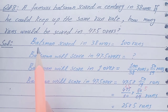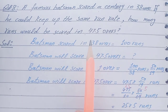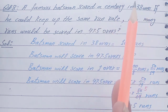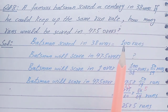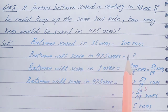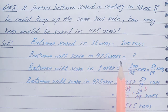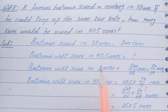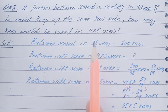Solution: it is given that the batsman scored 100 runs in 38 hours. We need to find how many runs the batsman will score in 47.5 hours — that is our question mark. First of all, we are using the unitary method. In the unitary method, we first find the value of a single unit. There were 38 hours and there are 47.5 hours.